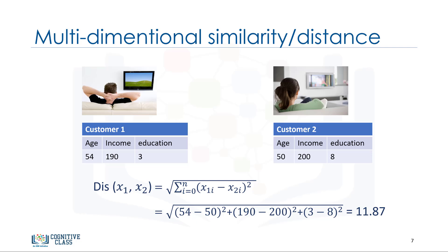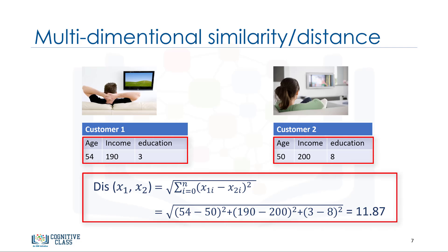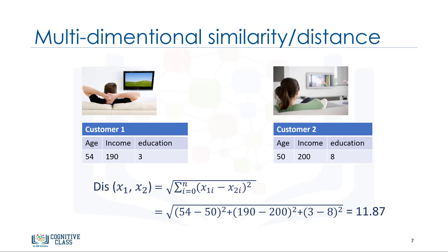Also, we can use the same distance matrix for multi-dimensional vectors. Of course, we have to normalize our feature set to get the accurate dissimilarity measure.